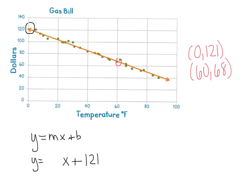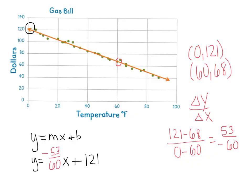So let's do again our change in y over the change in x, or our rise over our run. We're going to write out our first y coordinate minus our second one and put that over our first x coordinate minus our second one and see what we get. 121 minus 68 is 53, and then 0 minus 60 is negative 60. So our slope is roughly negative 53/60. I'm going to go back over here and write that in, negative 53/60. So we just wrote our equation for that line of best fit.